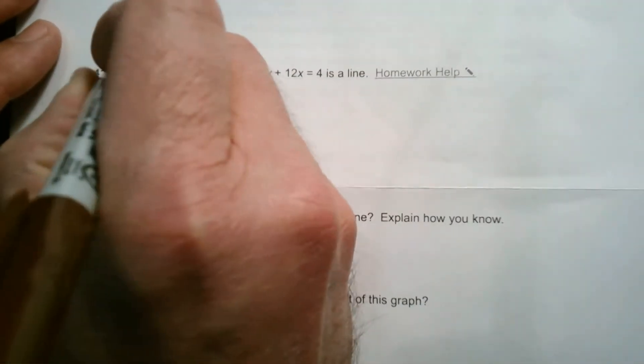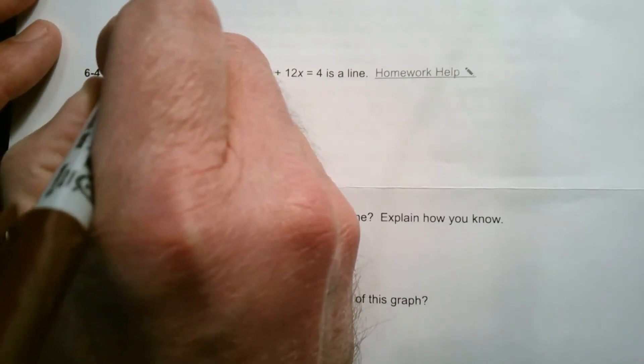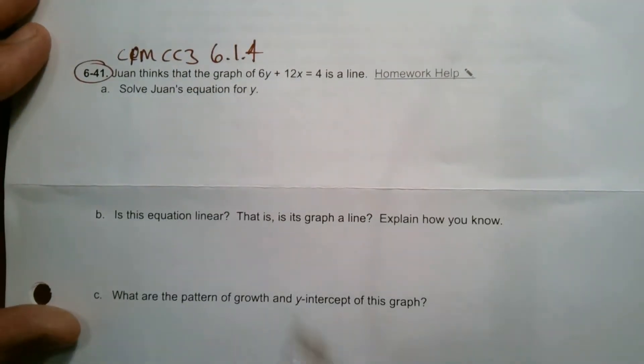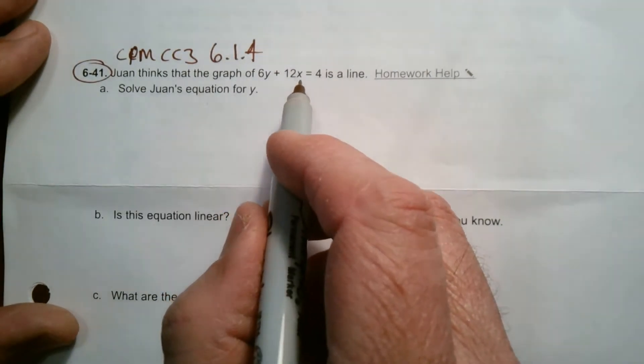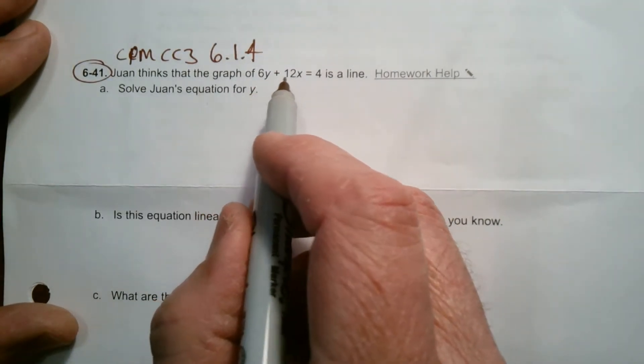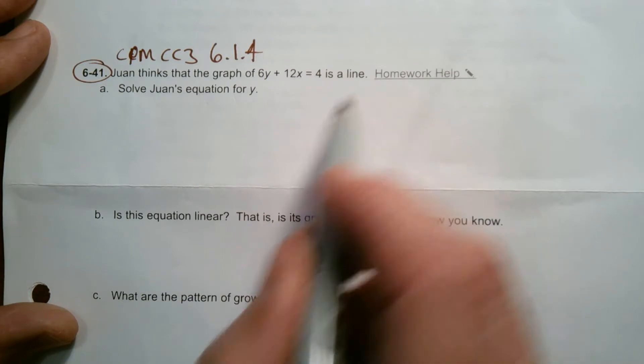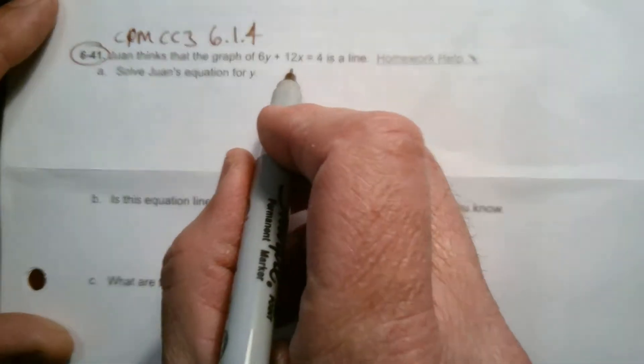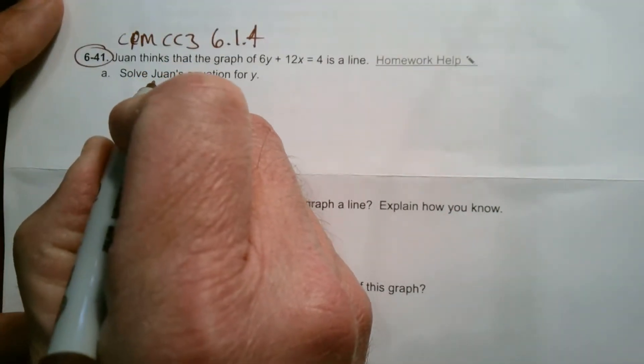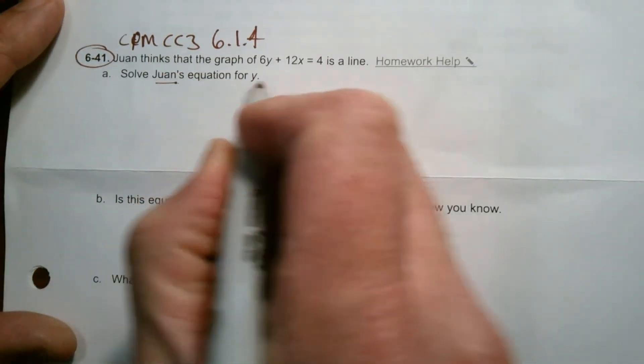So this is CPM Course 3, Section 6.1.4, number 6-41. Juan thinks that the graph of 6y plus 12x equals 4 is a line. So that's what Juan thinks. Juan is right, but let's talk about why. It first says solve Juan's equation for y.